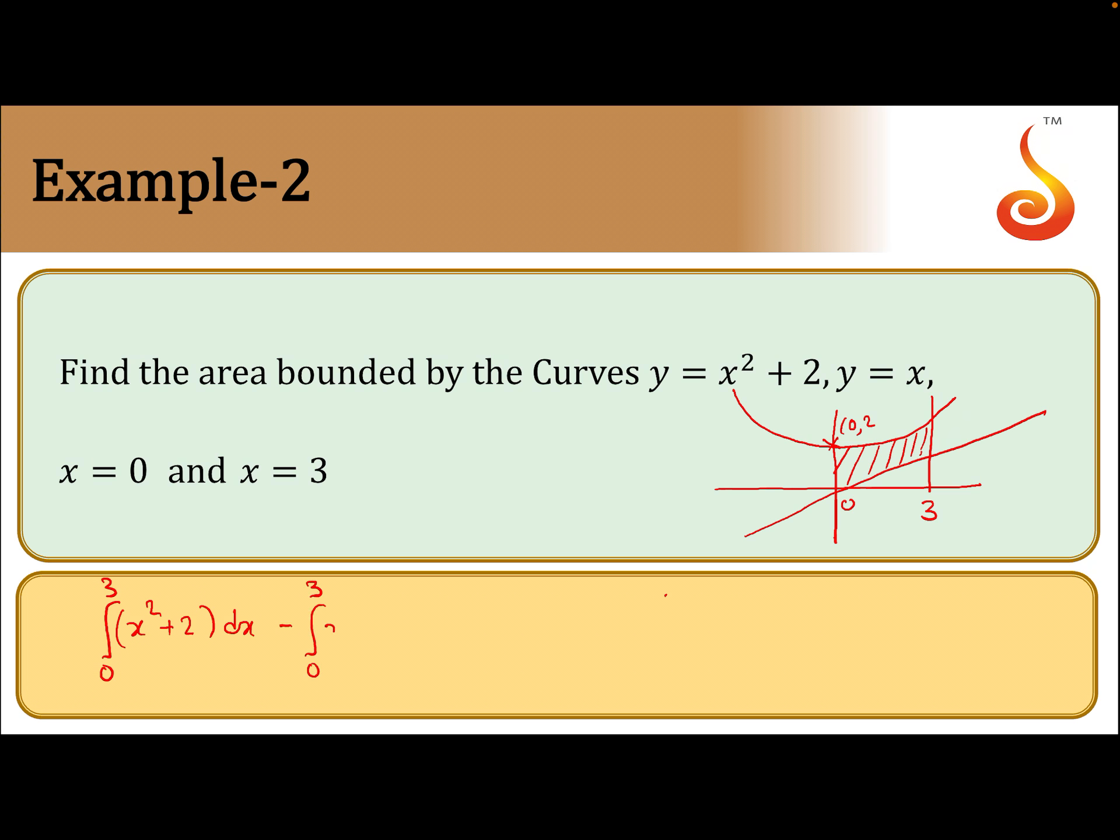This can be written as the integral from 0 to 3 of [x³/3 + 2x - x²/2]. If you substitute the values, we get 27/3 + 2(3) - 9/2. This will give you 9 + 6 - 9/2, which gives 15 - 9/2.